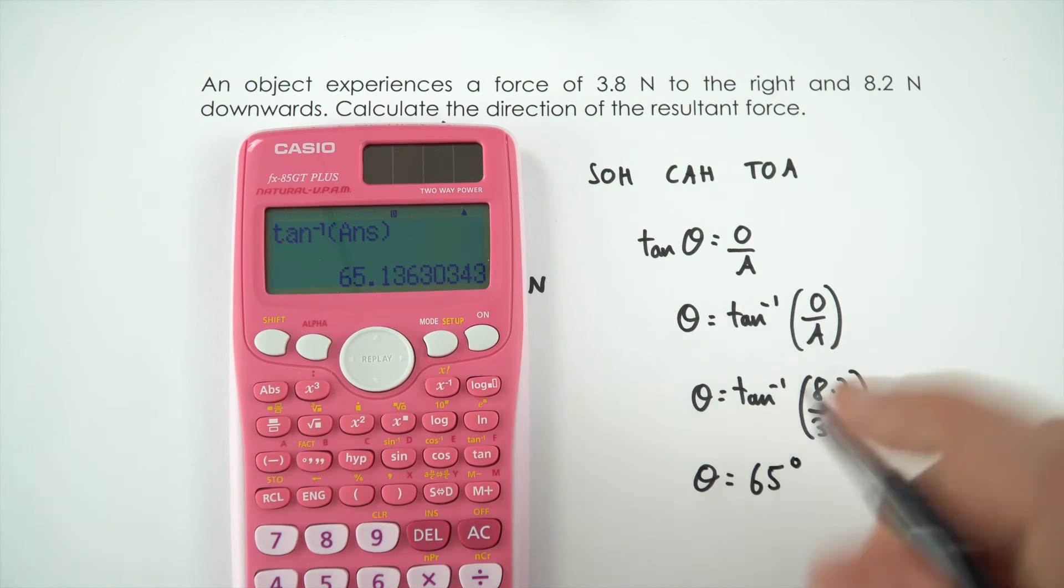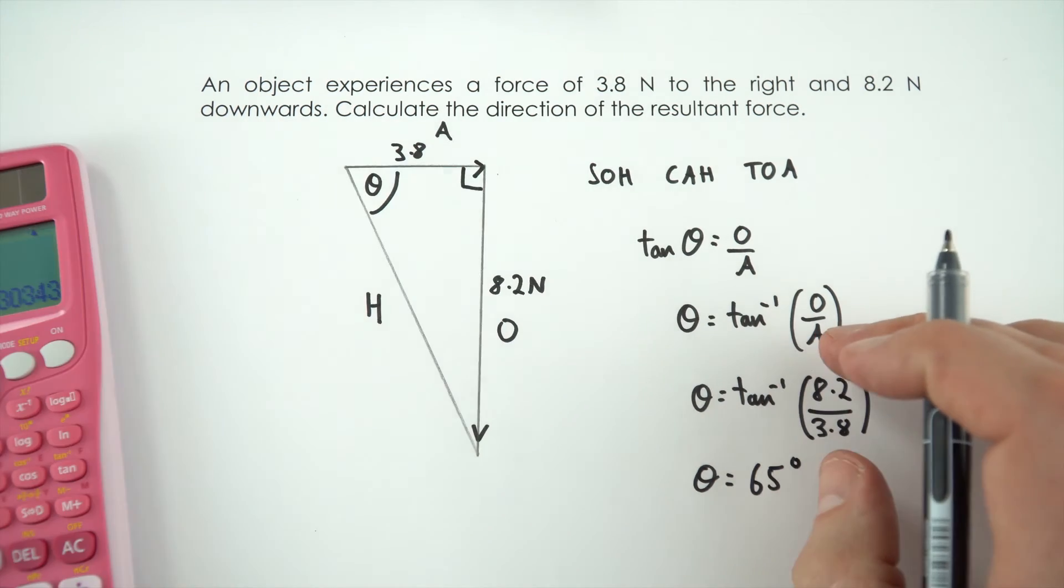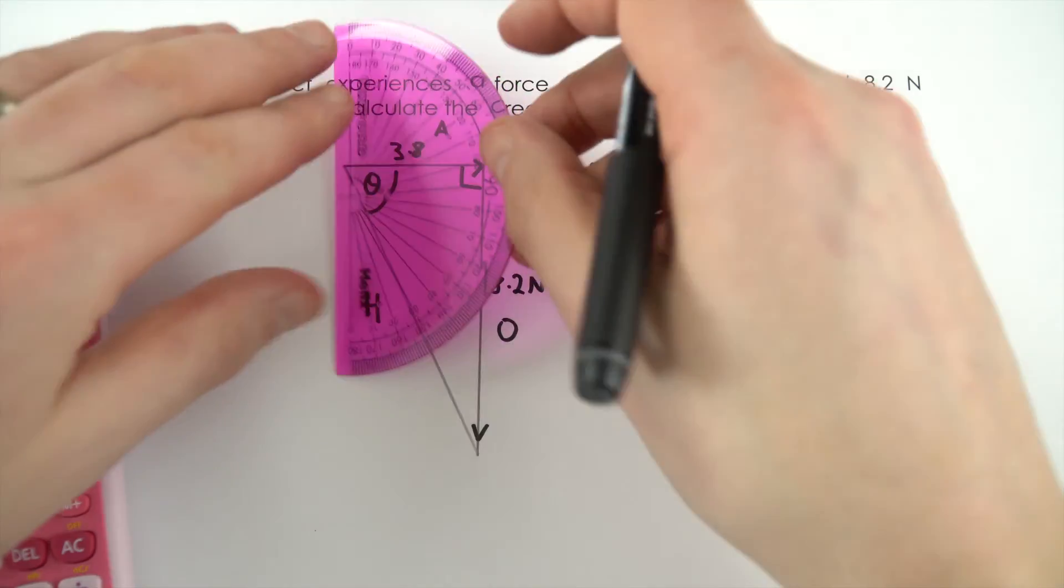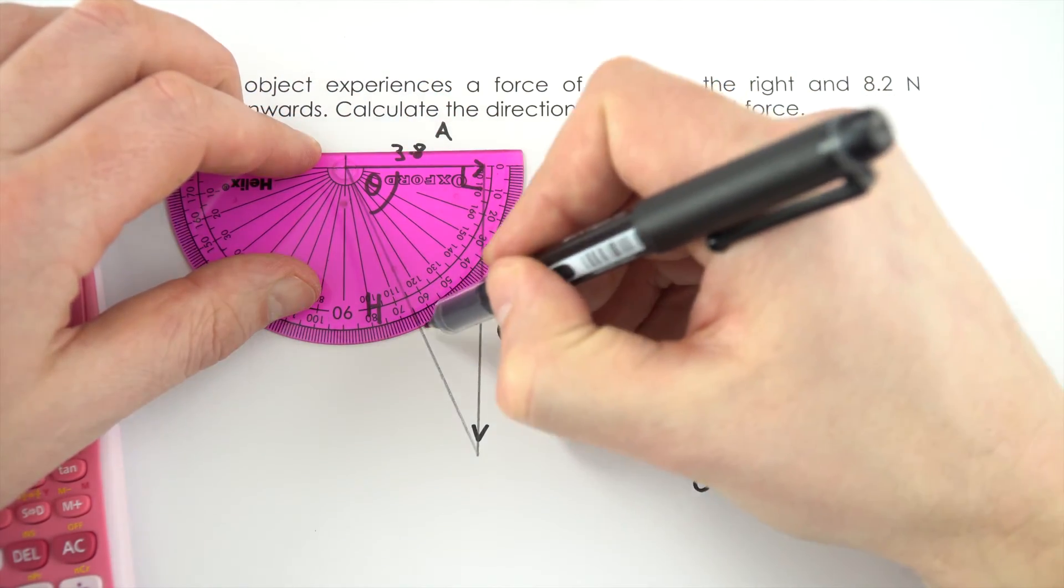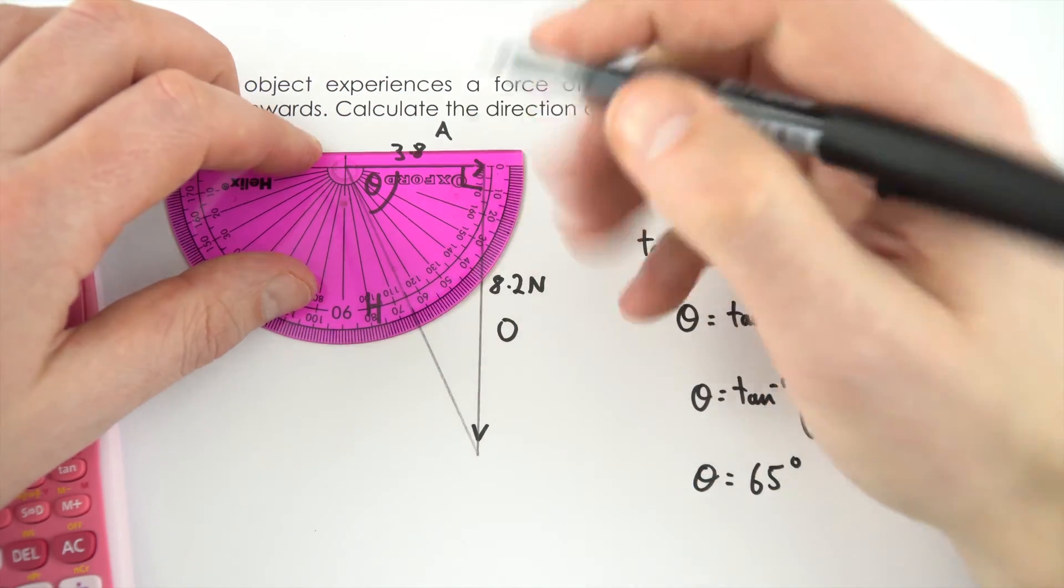Just two significant figures. Is that right? Let's just have a quick check using my protractor here. If I just line this up, if that's 0, this should be about 65. Bang on.